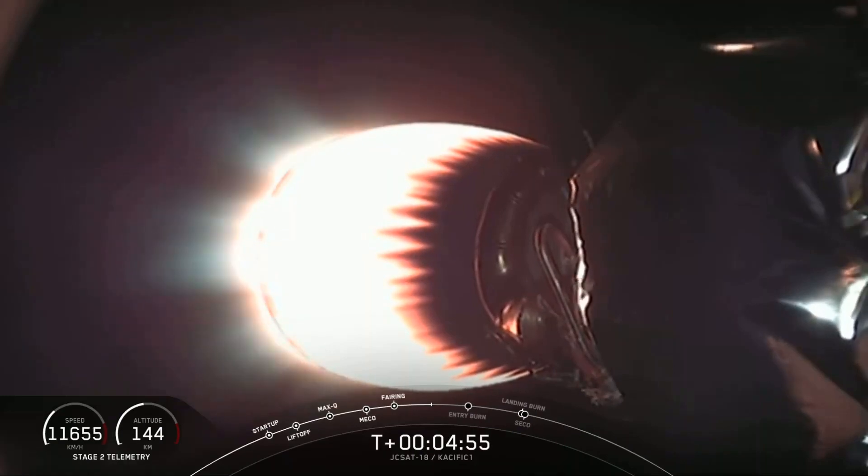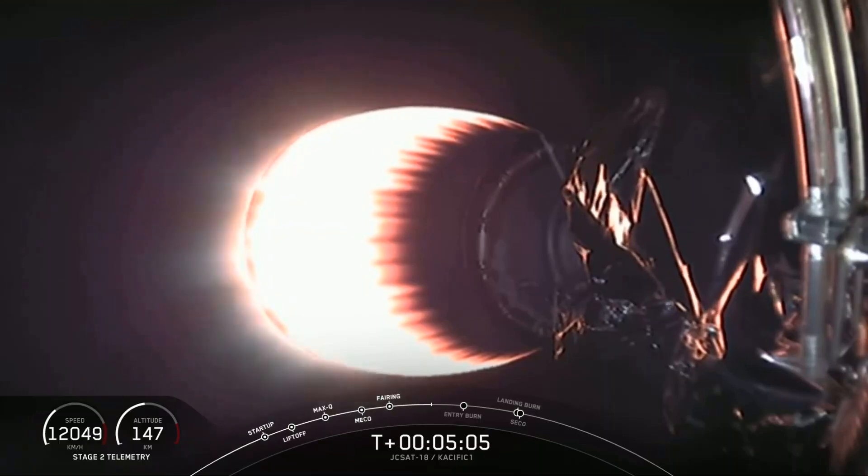When we're above the drone ship, a little after T plus eight minutes, the center Merlin engine will ignite for landing burn, followed by landing leg deploy and hopefully a gentle touchdown on Of Course I Still Love You.